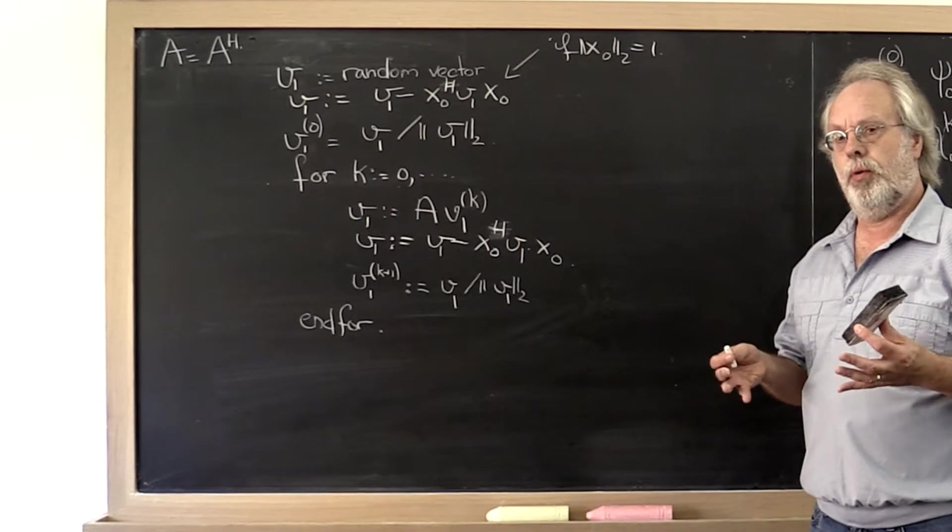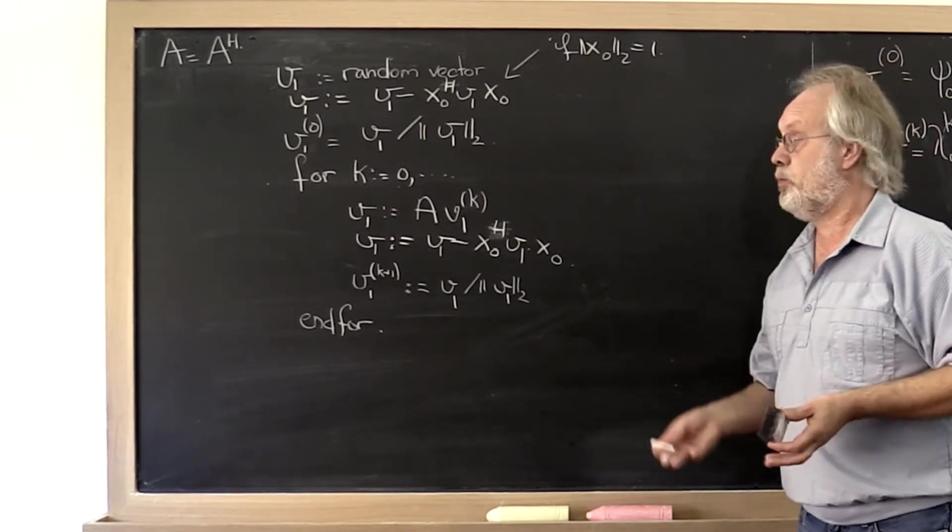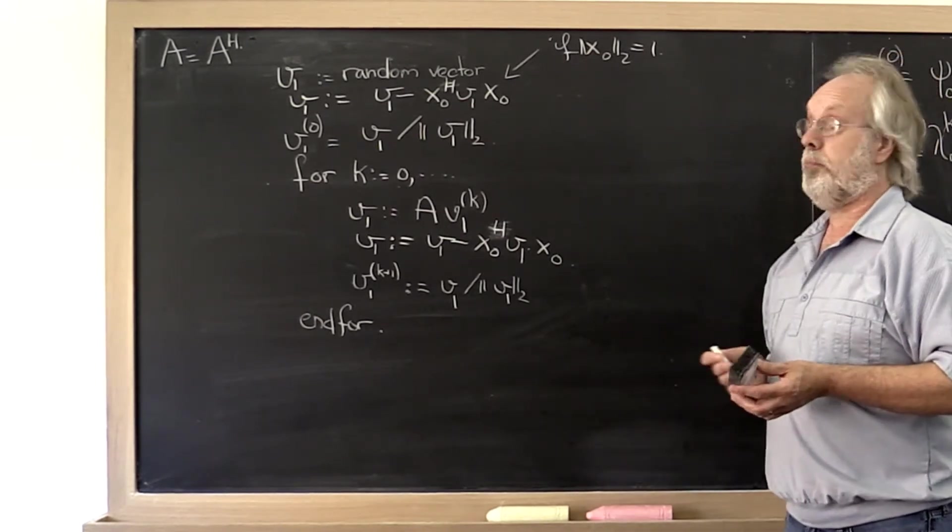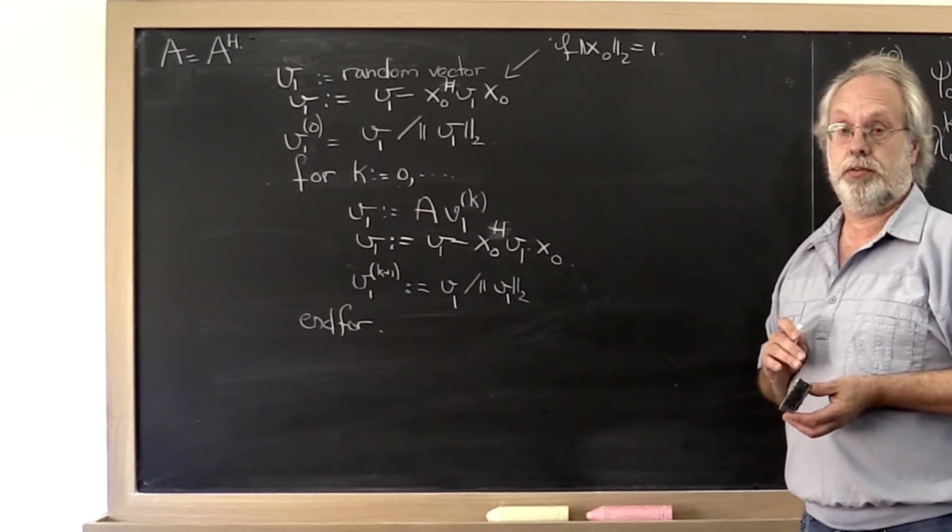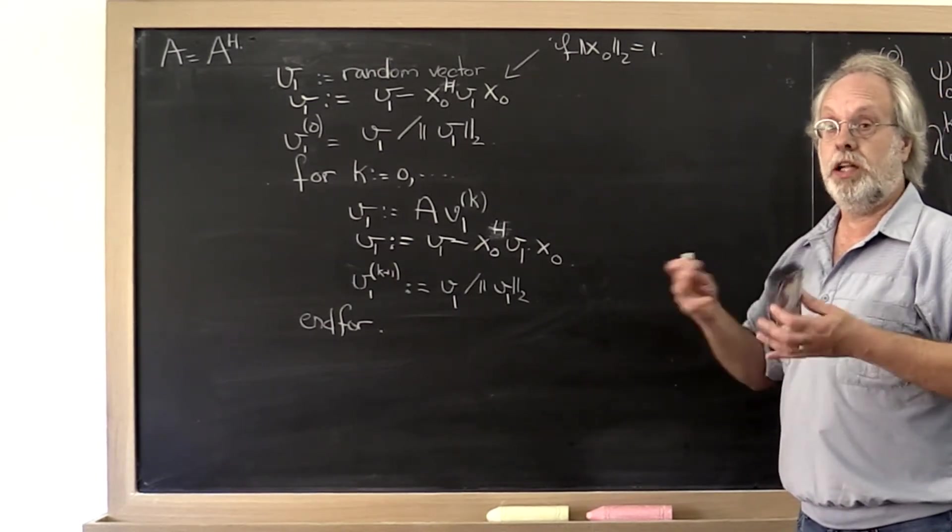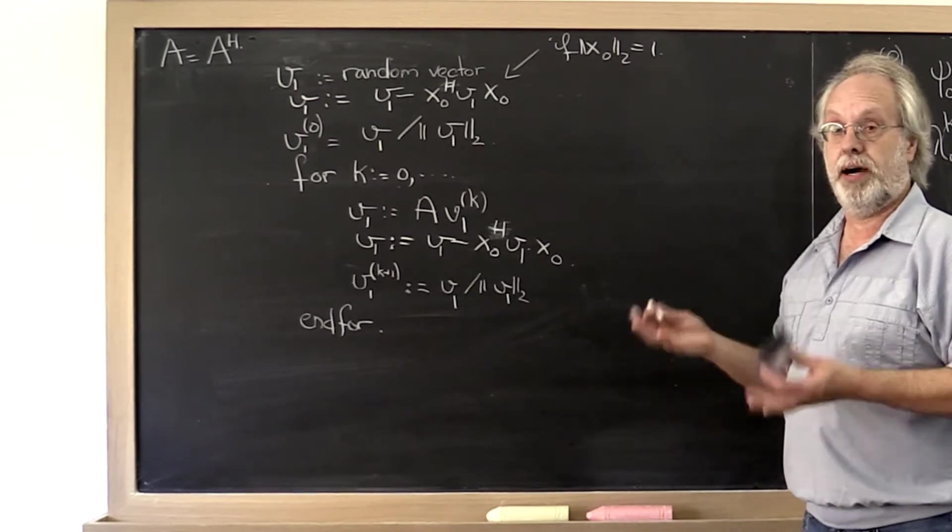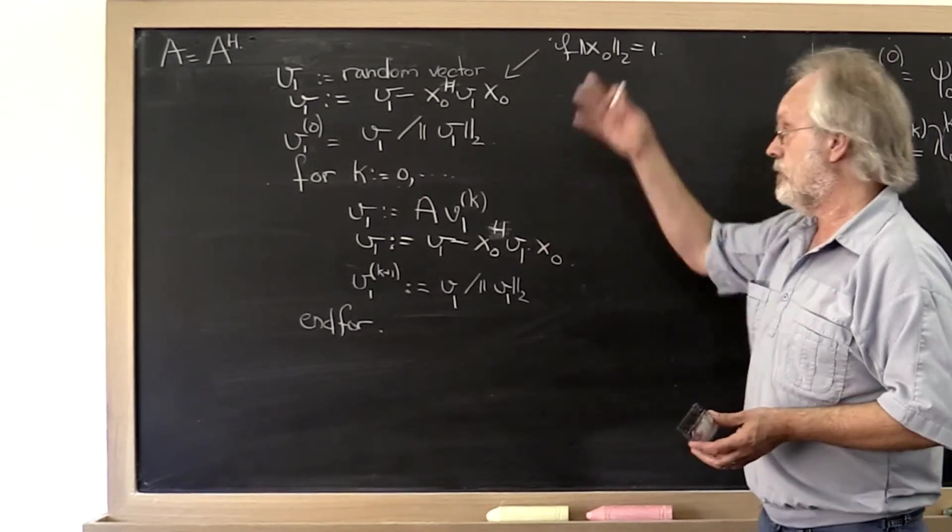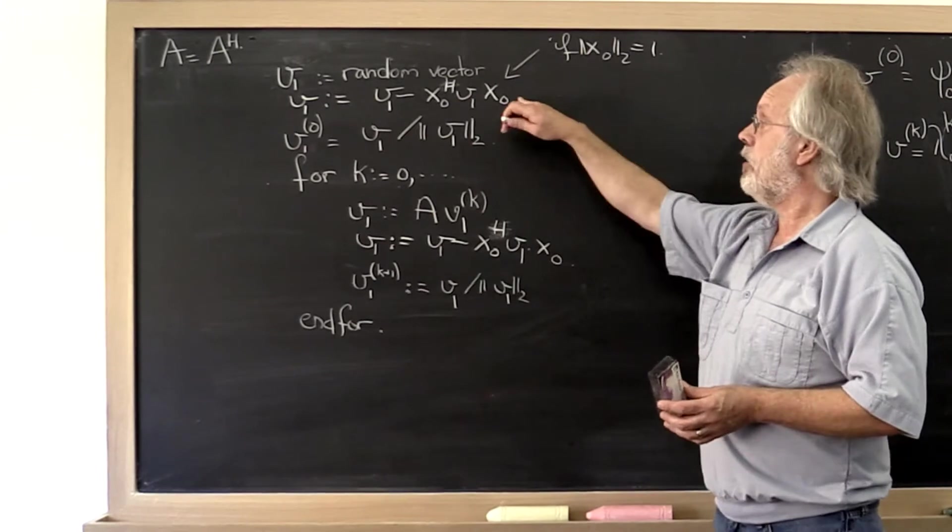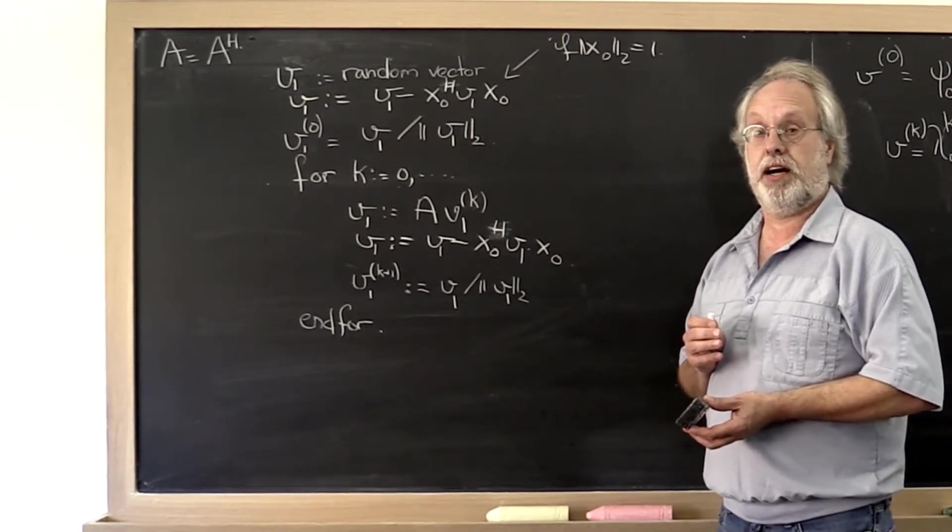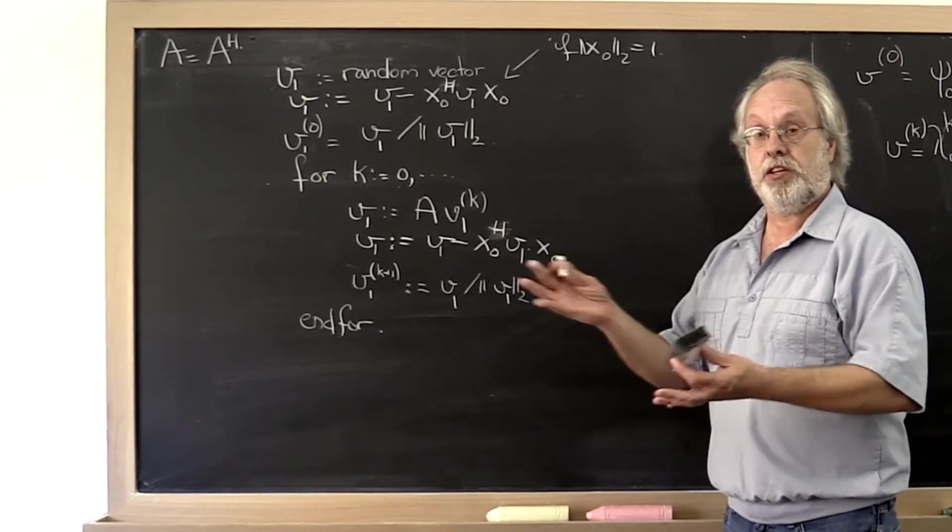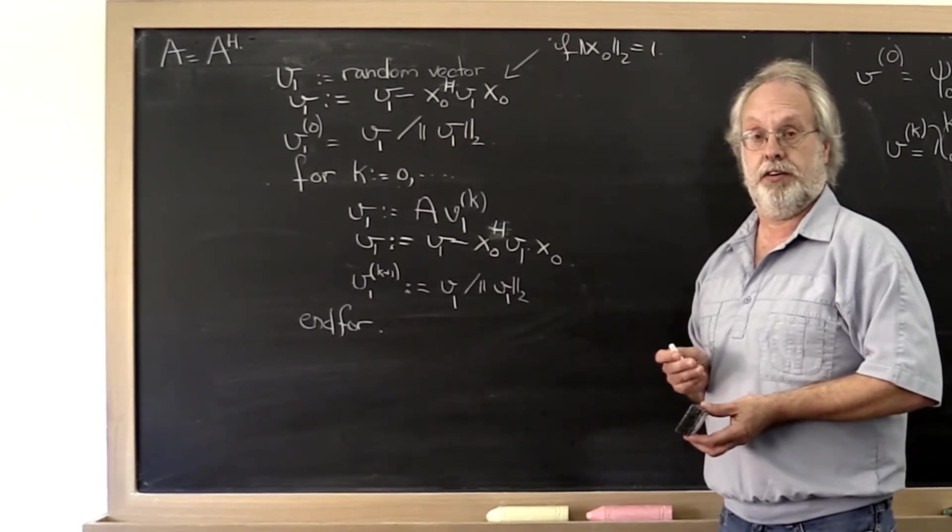So what we have now is a method by which we execute the power method in order to find this vector x0. And then once we're done with that, we come back and we say let's run the power method again, but now let's keep subtracting out the component in the direction of that eigenvector that we just found, thereby forcing it to home in on the next eigenvector.